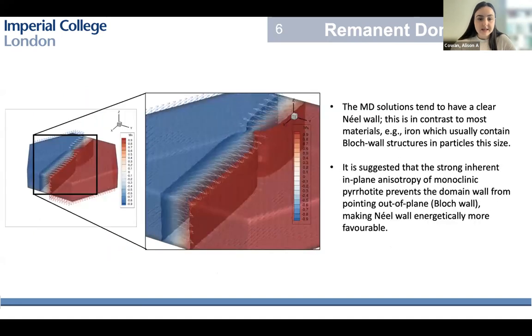We see this again if we look a bit closer at the multi-domain solutions. We could see that the domain walls are Néel walls, which means there's rotation of the magnetization within the plane, which is unusual because at these kind of particle sizes, we would probably expect it to be an out-of-plane Bloch wall. So it's suggested that the strong inherent in-plane anisotropy of this prevents the domain wall from pointing out of plane. So in this case, the Néel wall is more energetically favorable.